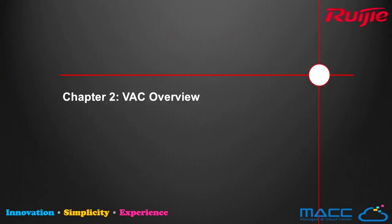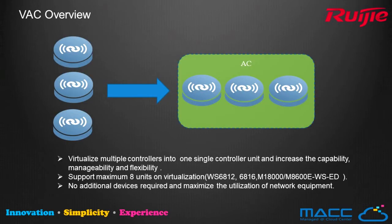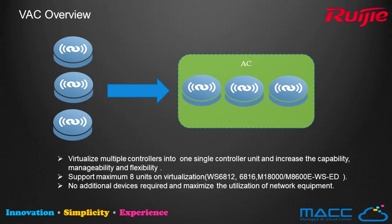So what are the benefits of VAC? With this new technology, we can virtualize multiple physical controllers into one single logical controller unit, increasing capability, manageability, and flexibility. Because VAC is a single logical device, the network design is simplified with no extra L2 and L3 protocols between controller members. The VAC instance supports a maximum of eight controller units in virtualization, such as WS68-12, WS68-16, M18K, and M8600E WSED. No additional devices are required, maximizing the utilization of network equipment.